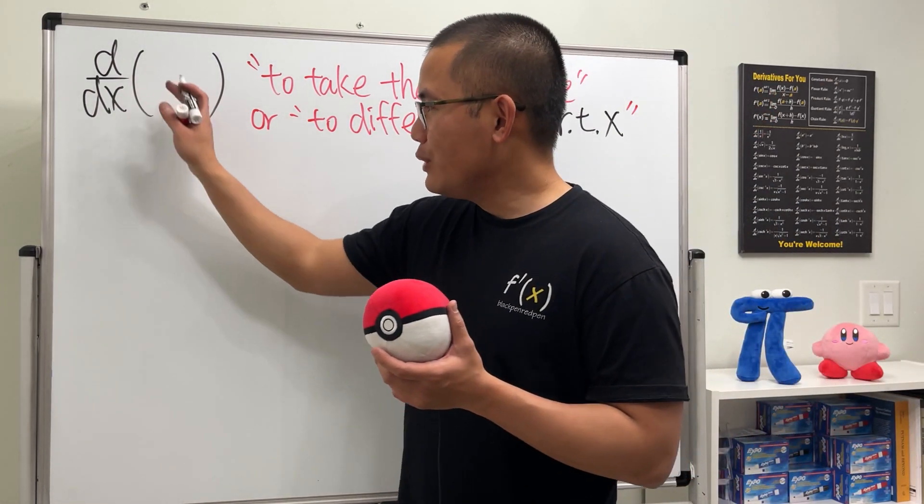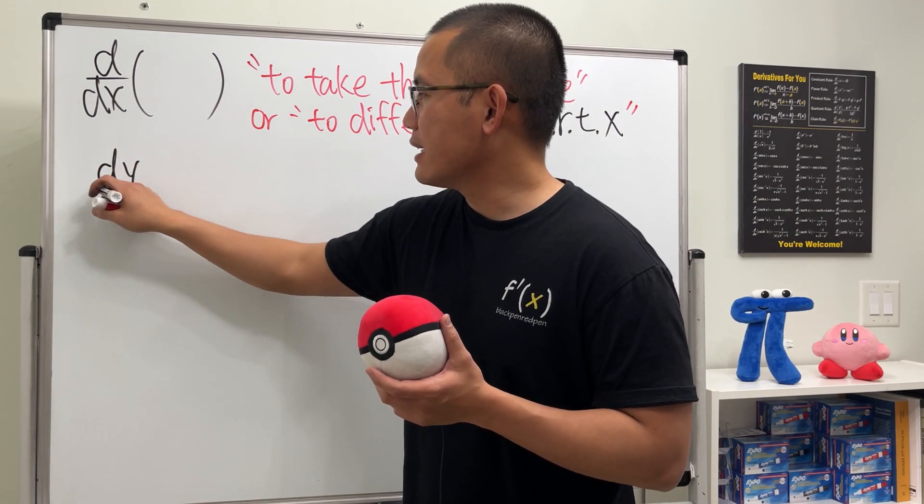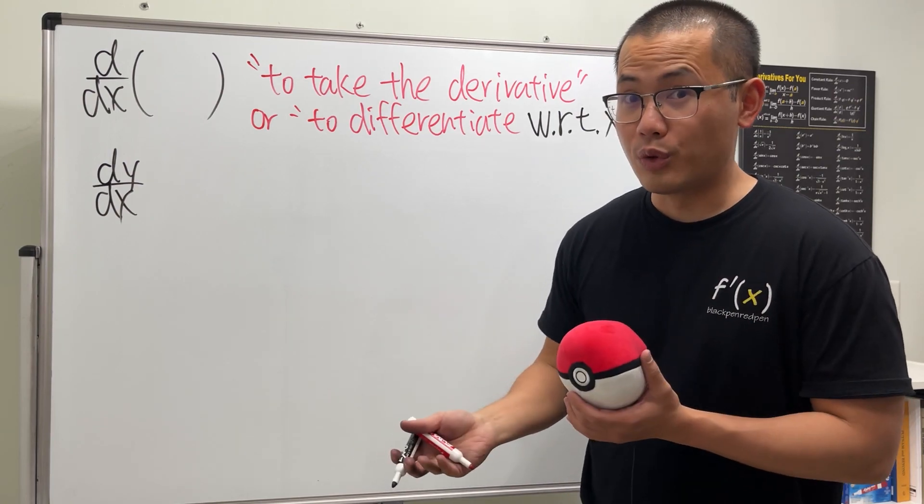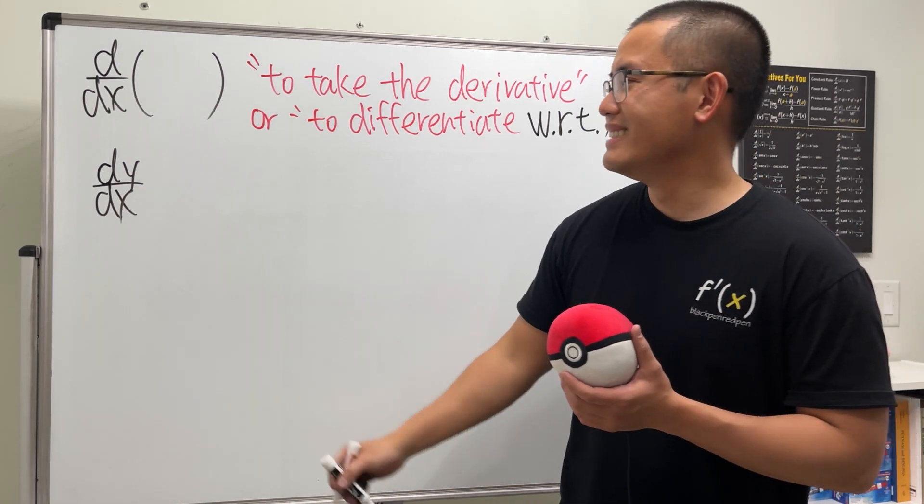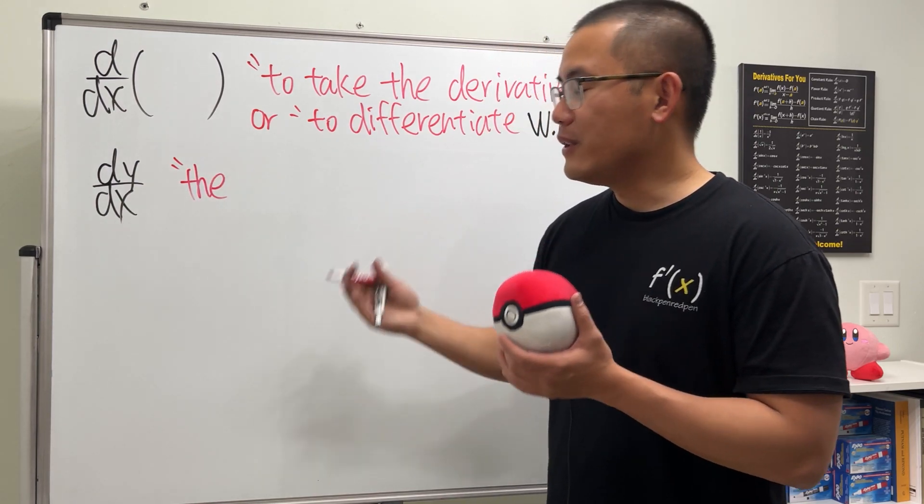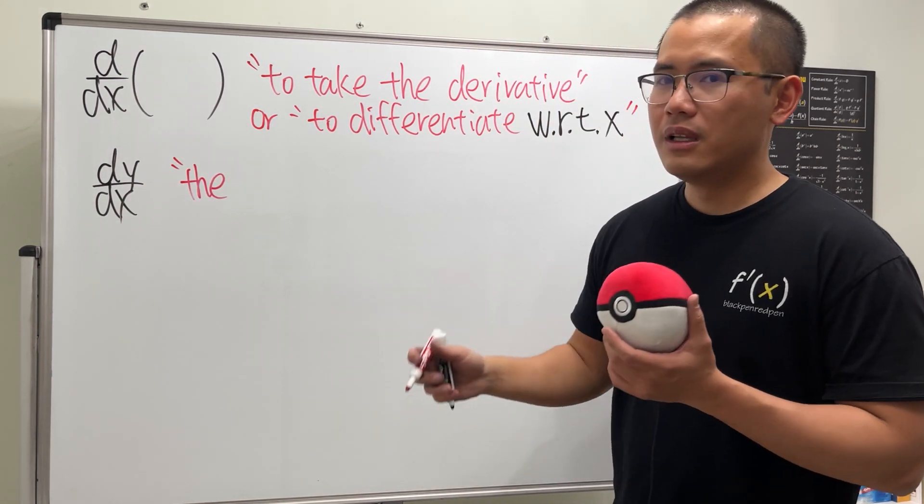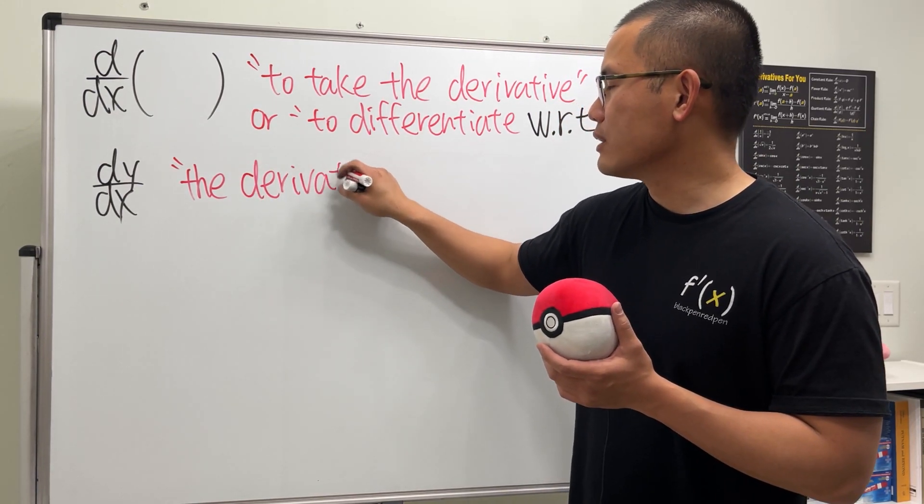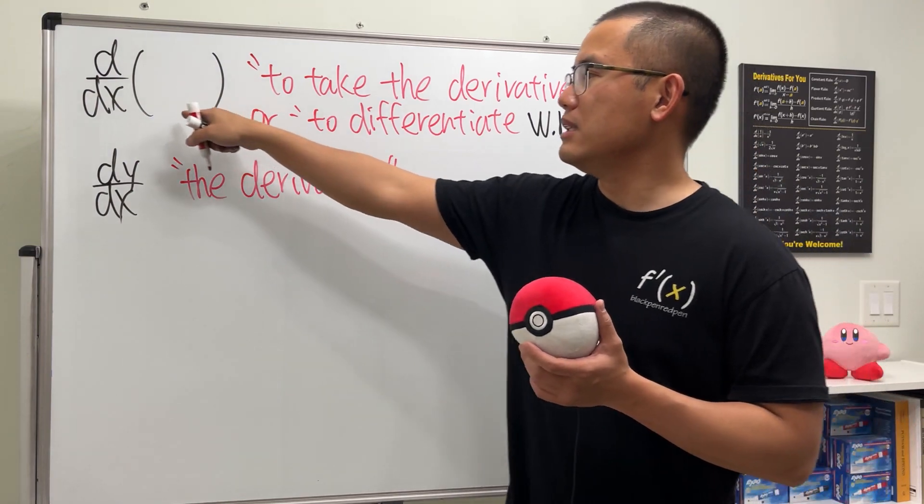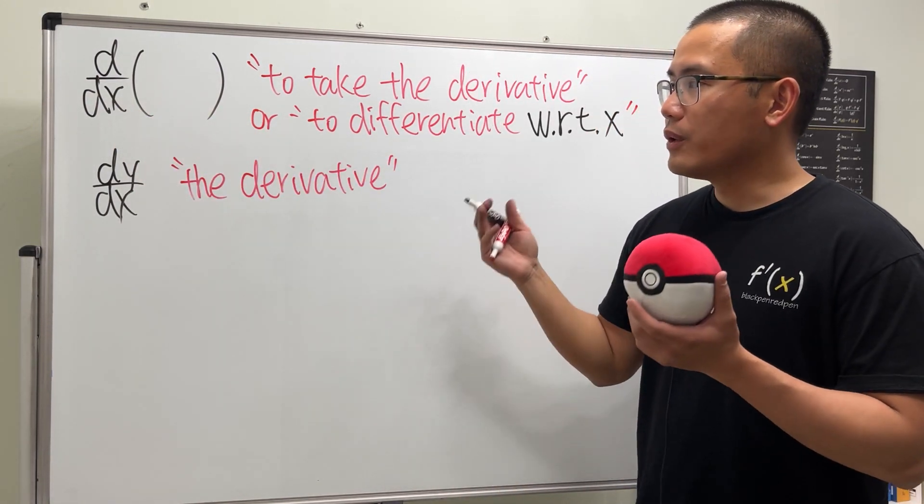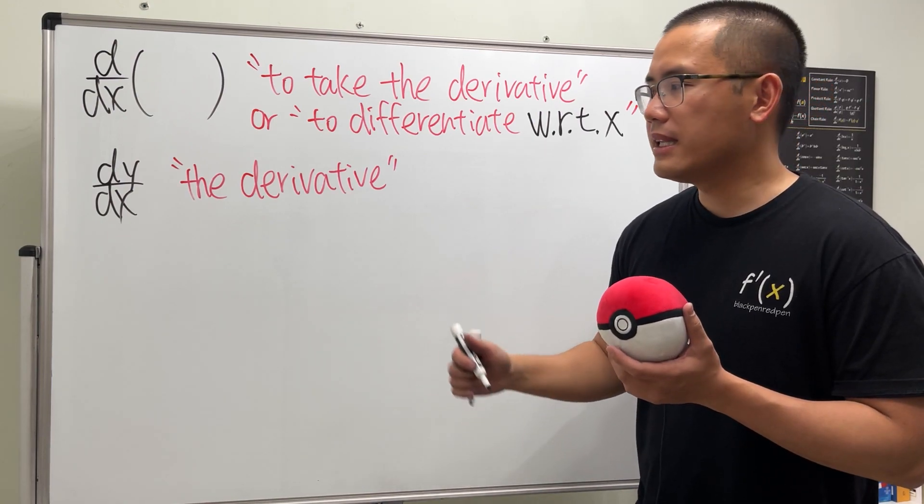So after you have done all that, then you will get dy/dx. And this right here is the result after we finish doing the derivatives by using all the rules. This right here is the final result, the final object. It's the thing, is the derivative. So this is a noun, it's not a verb. This is a verb, right, to take the derivative.